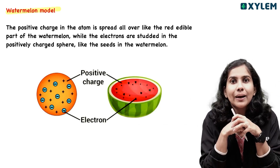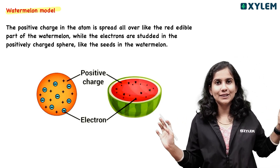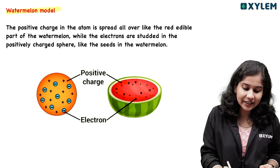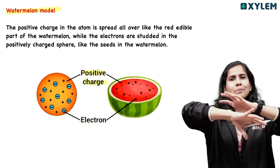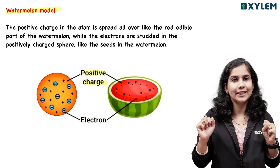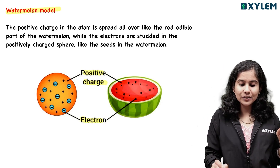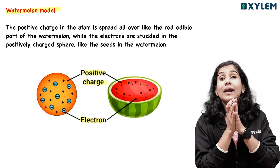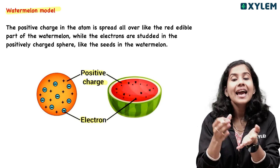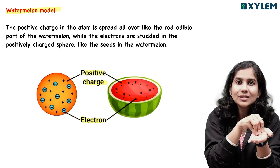We also compare this to the watermelon model. The watermelon's edible red part represents the positive charge, and the black seeds represent the electrons. The watermelon seeds compare to electrons.